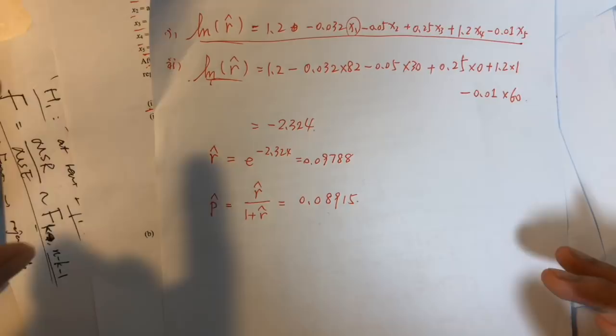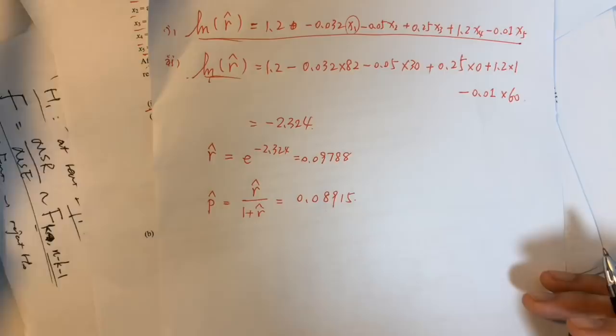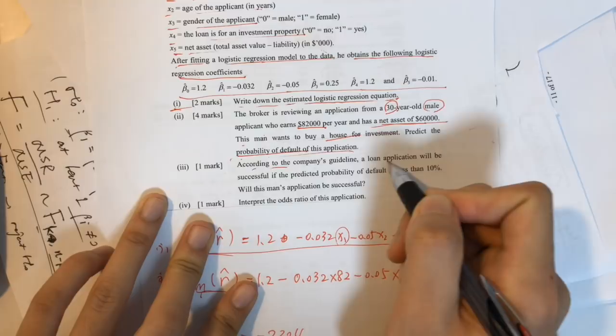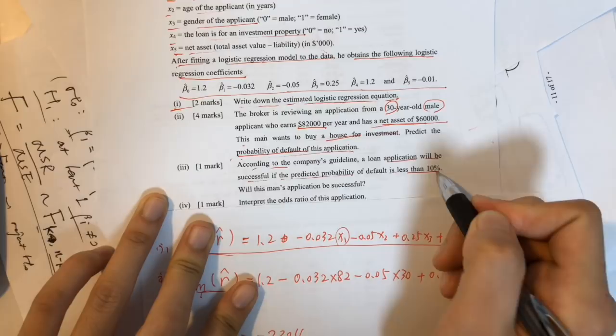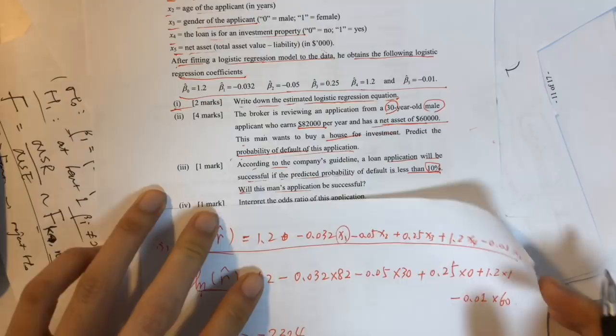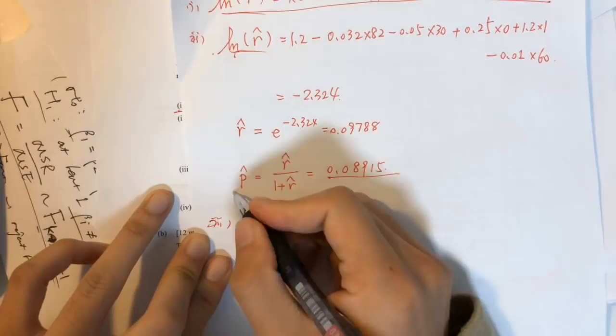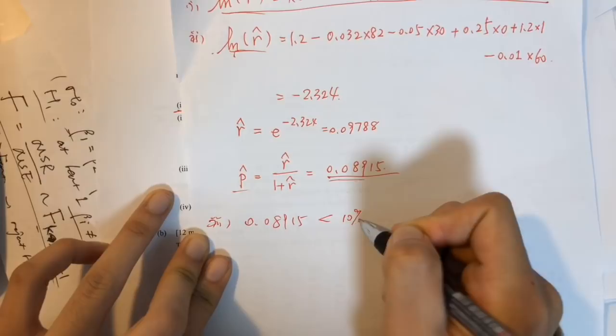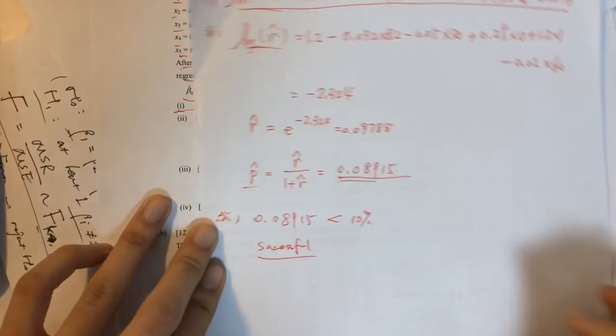If you can't see the video clearly, just refresh the page. For question three, according to the company's guideline a loan application will be successful if the predicted probability of default is less than 10%. Since our probability is 0.08915, which is less than 10%, this application will be successful.